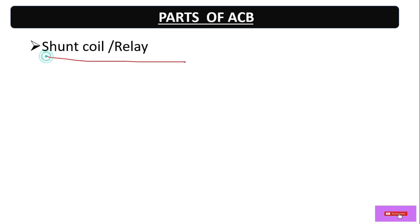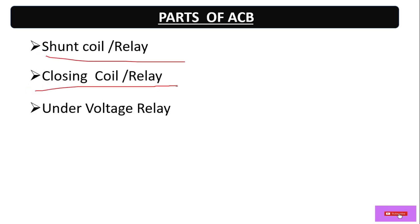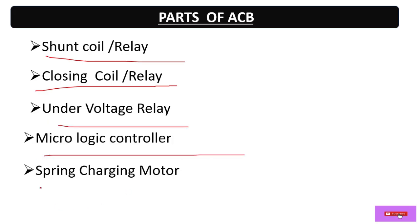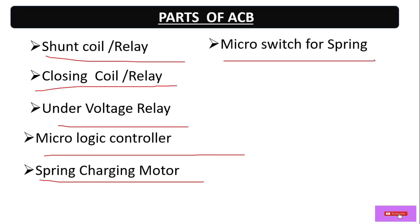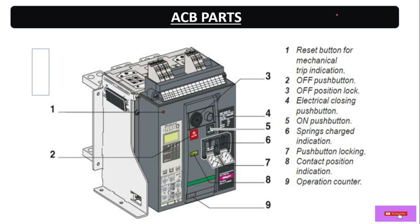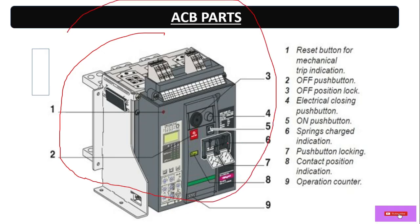Now let's discuss the parts of the ACB. The parts are: shunt coil or shunt relay, closing coil or closing relay, under voltage relay, micro logic controller, spring charge motor, micro switch for spring charge, auxiliary contacts, and arc chute and arc splitter.